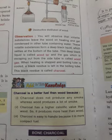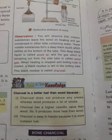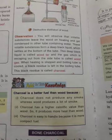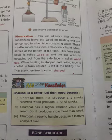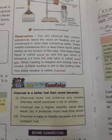Wood charcoal is black, porous, brittle, and soft. It floats on water because it contains plenty of air bubbles trapped in its pores. Wood charcoal can also absorb large volumes of gases onto its surface.